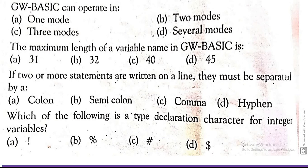Which of the following is a type declaration character for integer variable? For integer variable, which operator do we use for type declaration? The options are A, B, C and D.